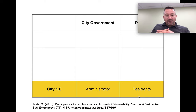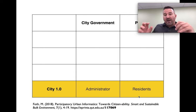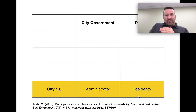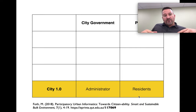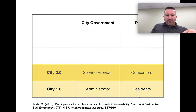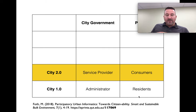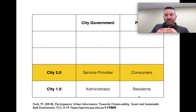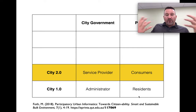Often here in Australia the city government is sometimes referred to as looking after the three R's: roads, rates and rubbish. A lot of city governments wanted to lift their game and consider themselves as a service provider, and that changes the relationship of people and businesses to the role of consumers — the consumers of city services.